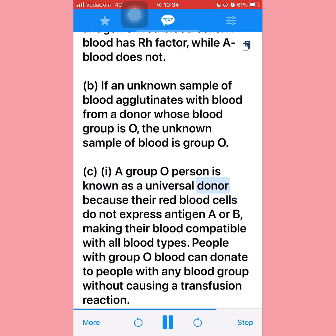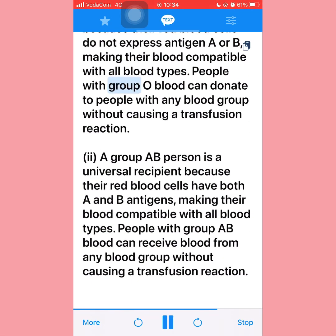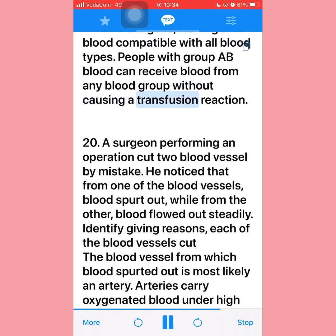Part (c)(i) — A group O person is known as a universal donor because their red blood cells do not express antigen A or B, making their blood compatible with all blood types. People with group O blood can donate to people with any blood group without causing a transfusion reaction. (ii) — A group AB person is a universal recipient because their red blood cells have both A and B antigens, making their blood compatible with all blood types. They can receive blood from any blood group without causing a transfusion reaction.